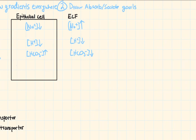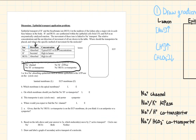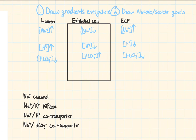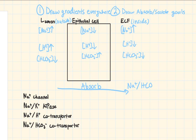Draw your absorption and secretion goals — essentially draw this column from your chart. We need to know which direction is absorption and which is secretion. The ECF is considered inside of your body because the ECF is your blood, and the lumen is considered outside because whatever is inside the lumen cannot be used for metabolism. So absorption means bringing something from outside to inside — that is going from left to right. At the end of the absorption arrow, we put sodium and bicarb.